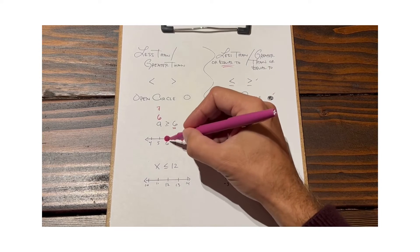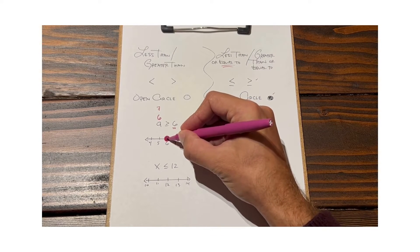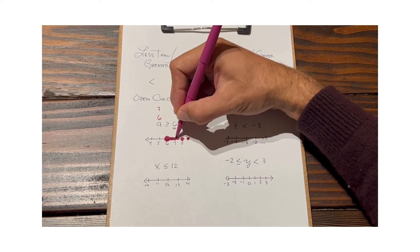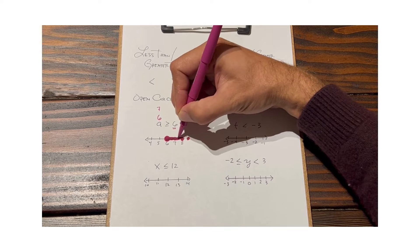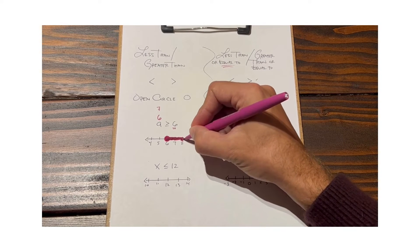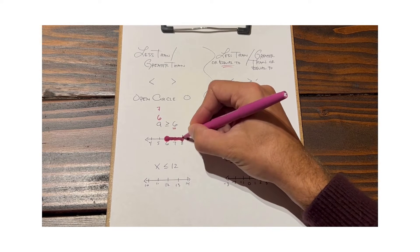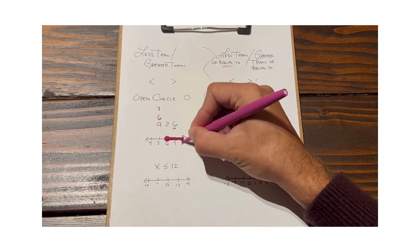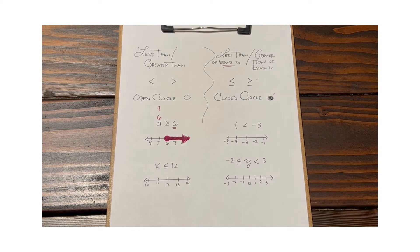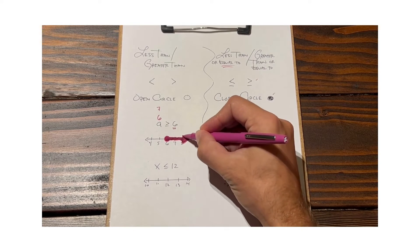That's why when we graph inequalities, we really care about what's happening at the critical value, and then we shade the direction where all solutions are true. In this case, it's everything greater than six, or to the right of six. So we bold the line to the right and put an arrowhead signifying it goes indefinitely to the right, capturing all values greater than or equal to six.